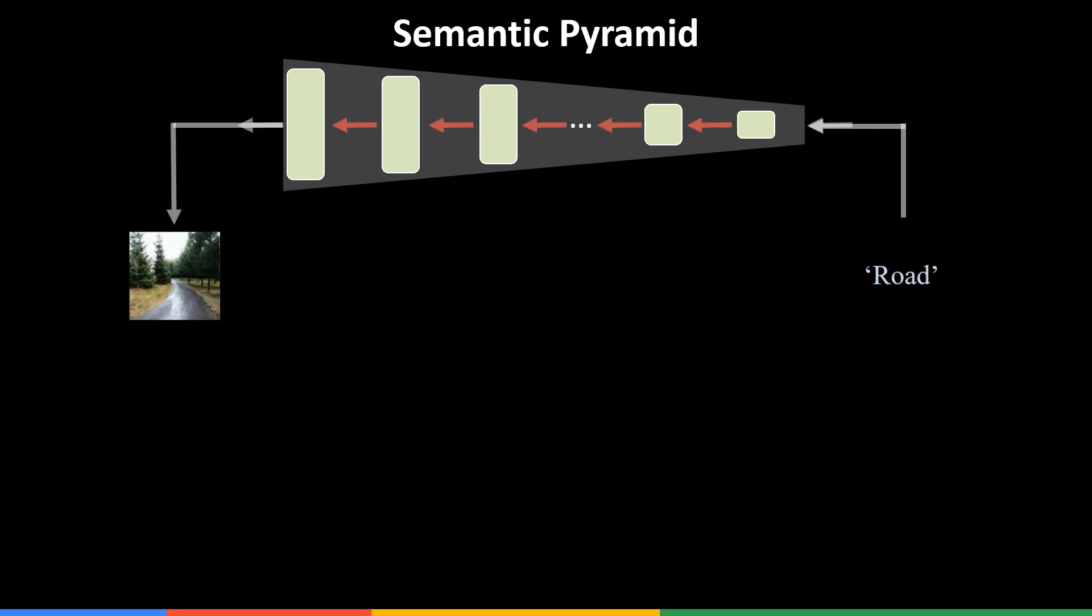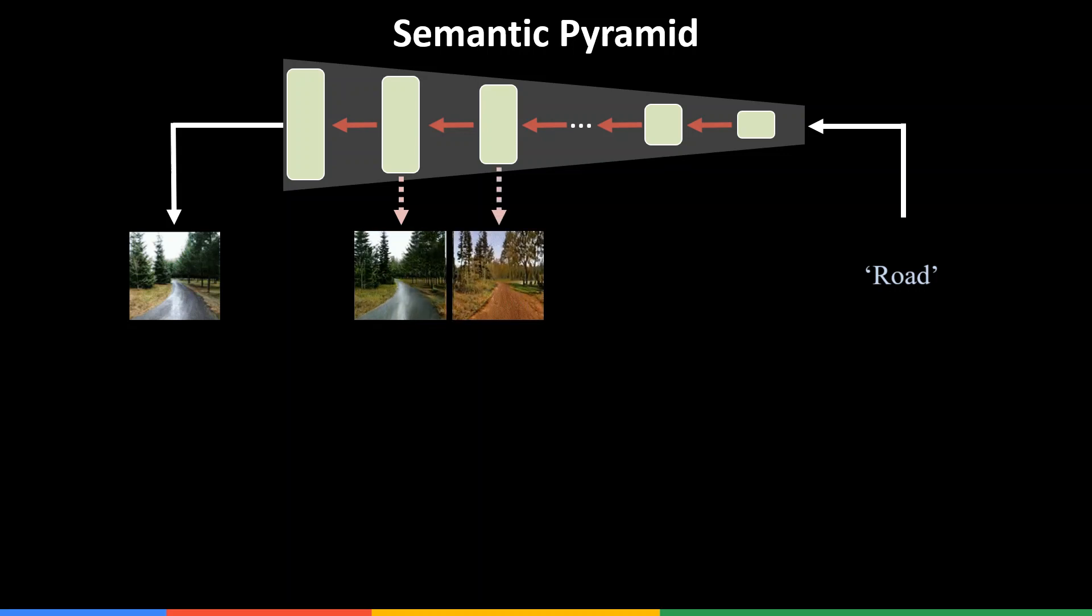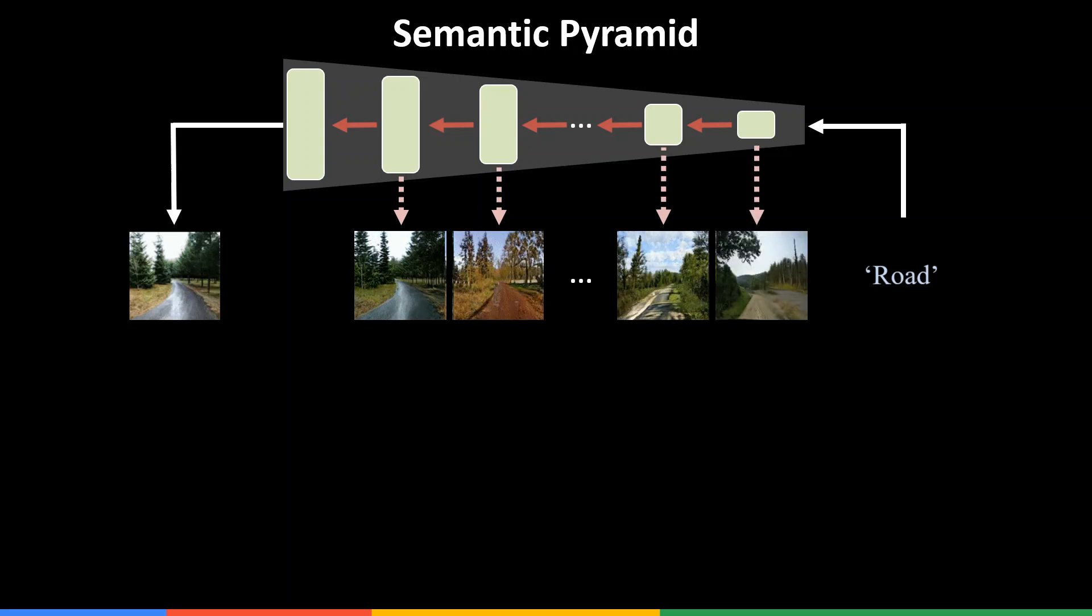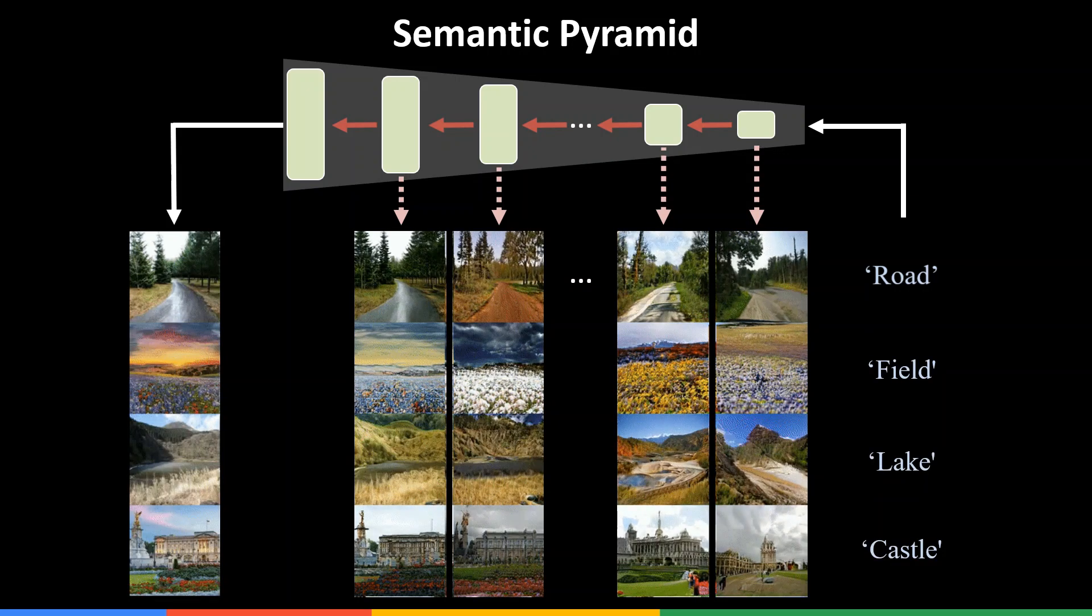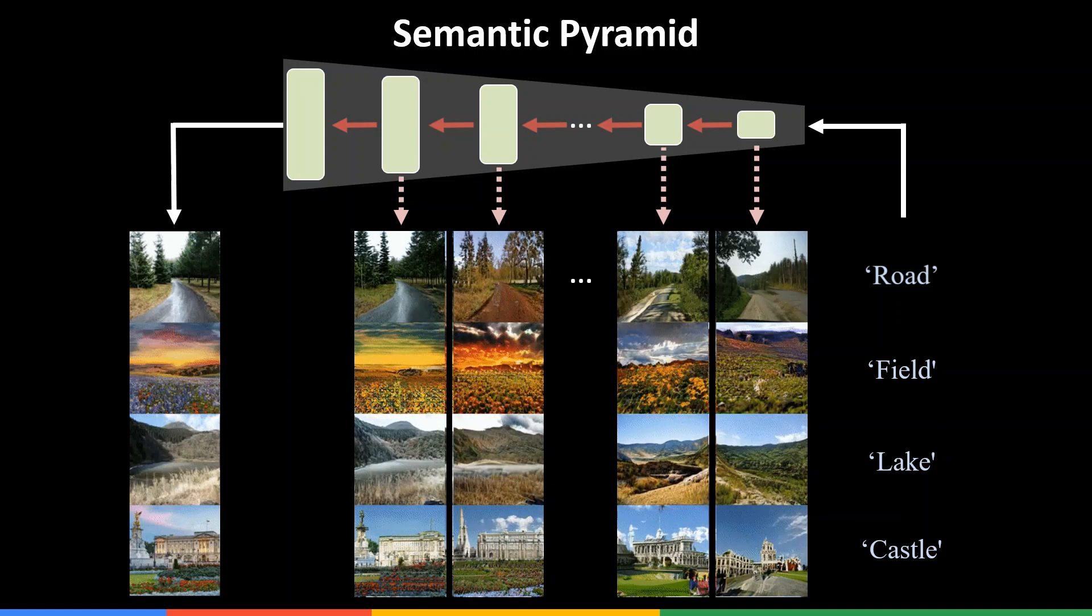Our semantic pyramid aims at inverting this process and generates different images that match intermediate feature maps. We don't generate just one image, we are able to explore the subspace of images matching an intermediate feature map, be it shallow layers or the deeper ones. The semantic pyramid is able to do that to any input image provided by the user in a single feedforward pass.